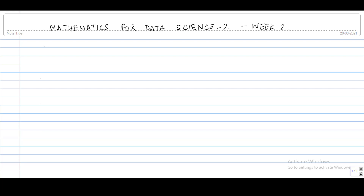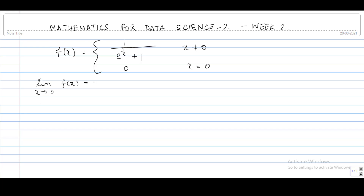Hello all. In this video we shall discuss the continuity of the function f(x) = 1 / (e^(1/x) + 1) when x ≠ 0, and 0 when x = 0. So, let us check if f is continuous at 0 or not. For that we need to check whether the limit as x tends to 0 of f(x) is equal to f(0), that is 0.